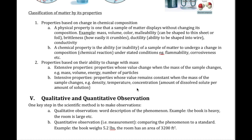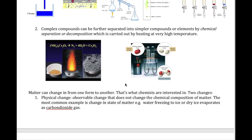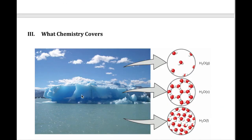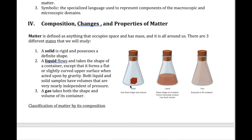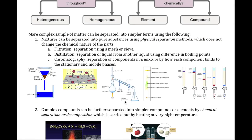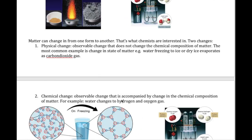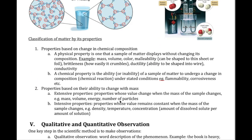An example of an intensive property is the melting point of ice, which is zero degrees Celsius. Whether you have one small cube of ice or a huge amount — like an iceberg — the melting point is still zero degrees Celsius. It doesn't depend on how much ice you have. That's what we call an intensive property. Other intensive properties include density and concentration (or molarity), which we'll discuss further in a few more chapters.